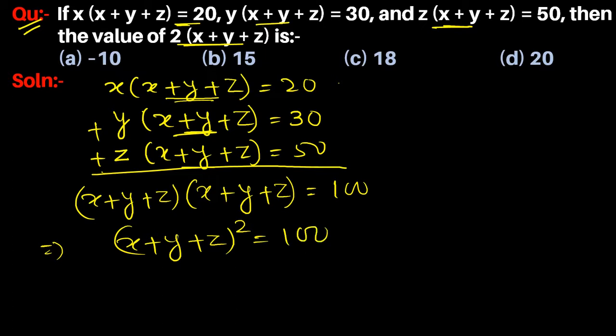is equal to 100, which is 10 squared. Therefore, x + y + z = 10. Now to find 2(x + y + z) = 2 × 10